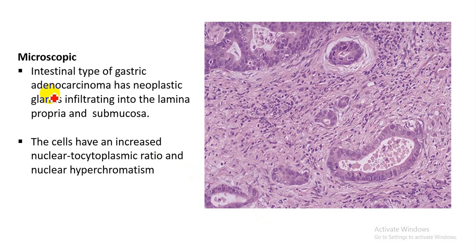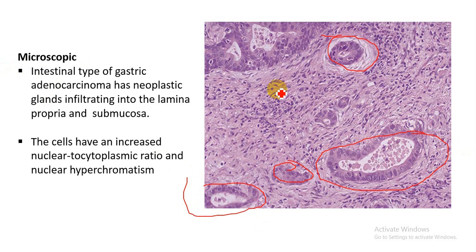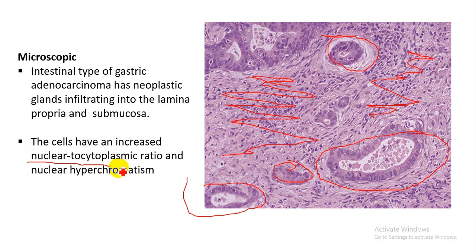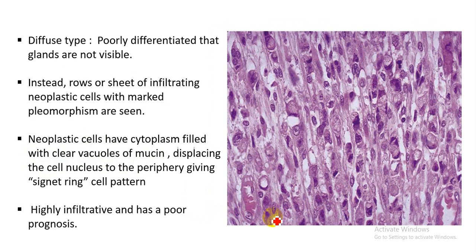In the microscopic features of the intestinal type, you can see glands extending into the submucosa, along with a desmoplastic response in the stroma. The tumor cells infiltrate into the lamina propria and submucosa. The tumor cells show an increased nuclear-to-cytoplasmic ratio and nuclear hyperchromasia.